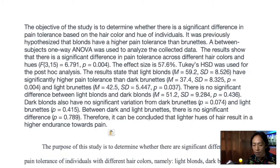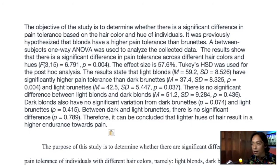Those four groups are individuals who are light blondes, dark blondes, light brunettes, and dark brunettes. The independent variable is hair color, which is categorical — there are four categories. The dependent variable is pain threshold or pain tolerance, which was measured as a continuous variable.